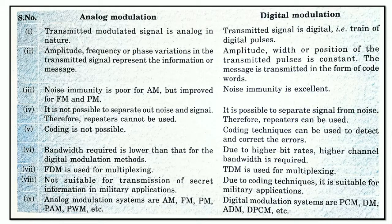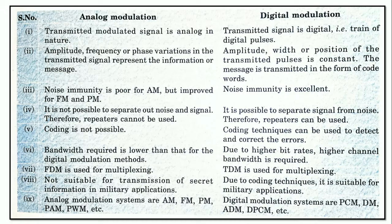The bandwidth requirement in analog modulation is less compared with digital modulation, whereas in digital modulation, due to higher bit rates, a higher channel bandwidth is required. In analog modulation, FDM — frequency division multiplexing — is used for multiplexing.